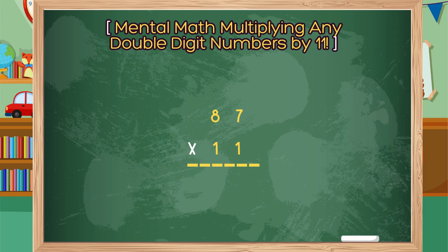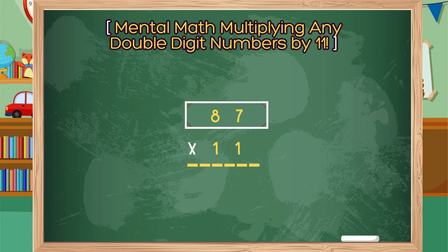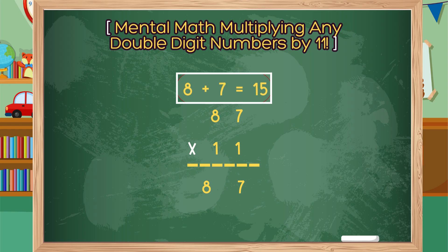87 times 11. If the sum of 8 plus 7 is 10 or more, then carry the digit over to the leftmost digit and add it. Step 1: Separate the digits of 87 and place them in the product area. Step 2: Add 8 and 7 together, which equals 15.